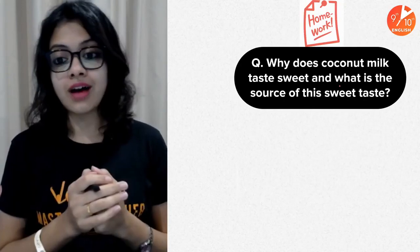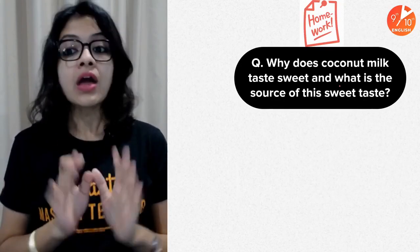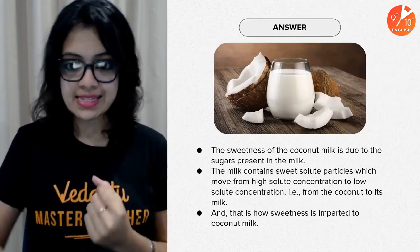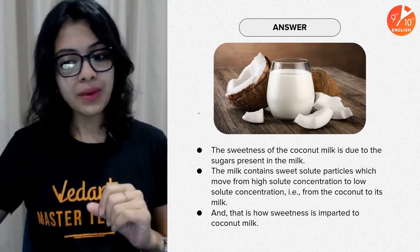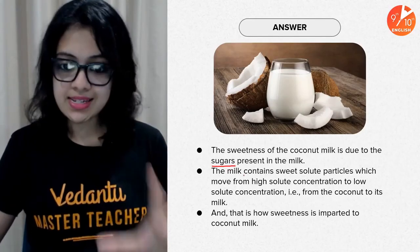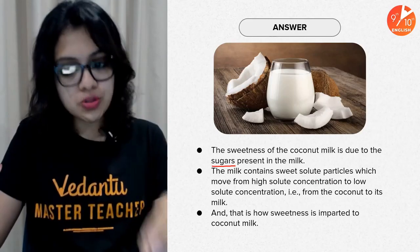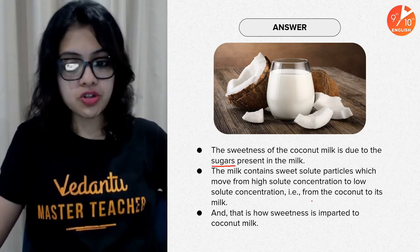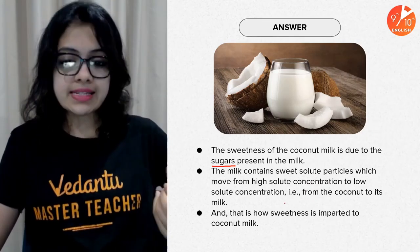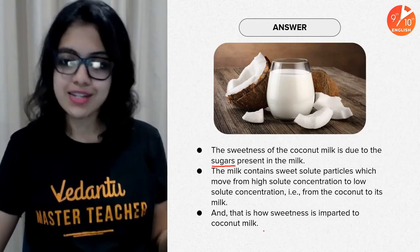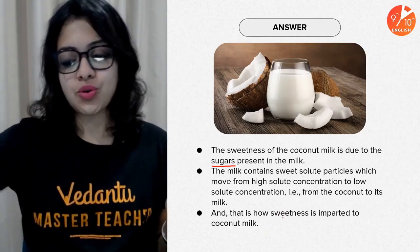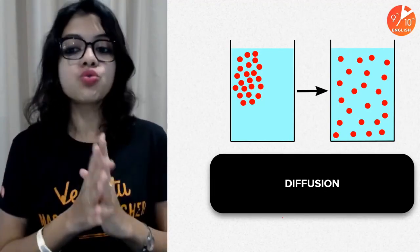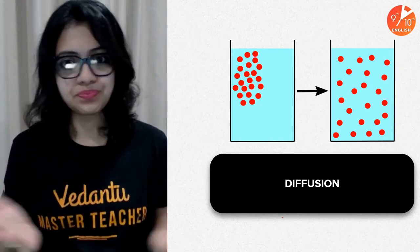Our homework question from the last session was: why does coconut milk taste sweet and what is the source of the sweet taste? The answer is that the sweetness is due to natural sugars present in the milk. Sweet solute particles move from high solute concentration to low solute concentration — from the coconut to its milk — and that is how sweetness is imparted. This talks about the concept of diffusion, from a higher concentration to a region of lower concentration.